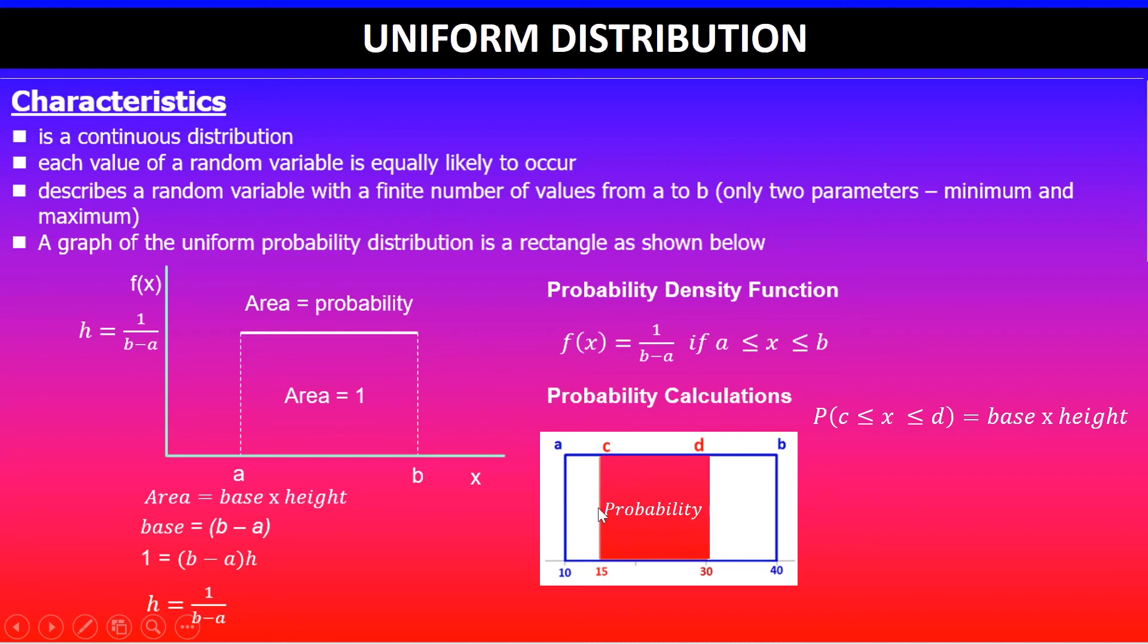So if I put that together, the base is (d - c) for the rectangle that I'm after, times the height, which is 1/(b - a) as shown earlier. If I quickly simplify this, I will get the probability.